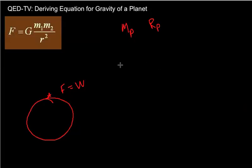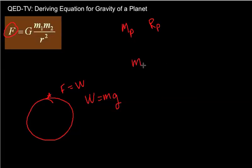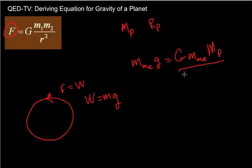If I take Newton's universal law of gravitation and think about the force that exists between me and the planet, that force is actually my weight. We know from Newton's second law that the equation for weight is mass times gravity. So this is going to be my mass times gravity, which equals big G times the mass of me, times the mass of the planet, divided by the distance between me and the planet squared.